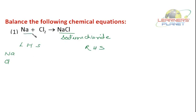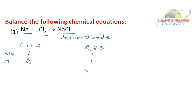How many atoms of sodium are there on the LHS side? It's 1. On the RHS side, it's also 1. How many atoms of chlorine are there on the LHS side? 2. And the number of atoms of chlorine on the RHS side? It's 1. How can you make it 2? We can just put a 2 in front of NaCl. So Na plus Cl₂ is giving us 2 NaCl.